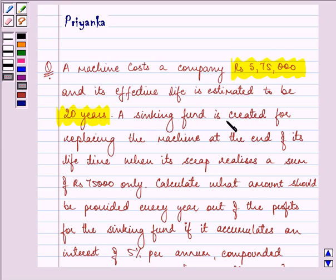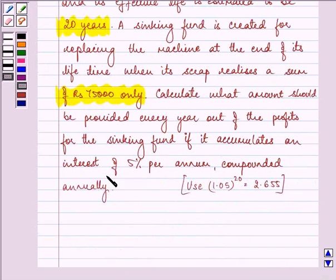A sinking fund is created for replacing the machine at the end of its lifetime when its scrap realizes a sum of Rs. 75,000 only. Calculate what amount should be provided every year out of the profits for the sinking fund if it accumulates an interest of 5% per annum compounded annually.